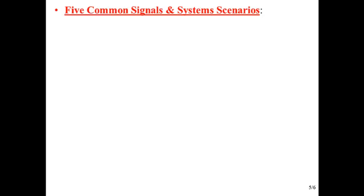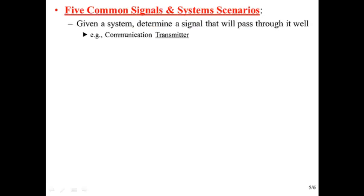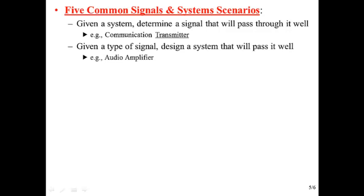So here's five common scenarios that will underlie our intentions in this course. You might be given a system and you want to try to determine some signal that will pass through it well. It won't be changed much as it goes through that system. So that's the case when we're trying to determine a communication transmitter. We want that transmitted signal to pass through the air and get to the receiver well. So we want to make sure we know how to do that.